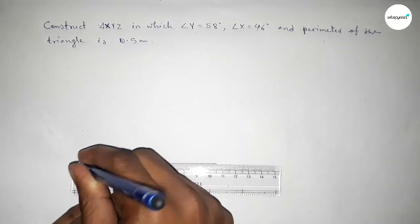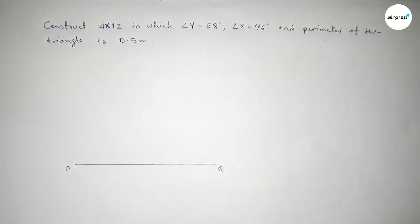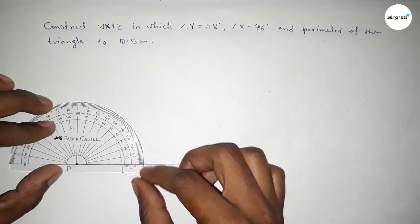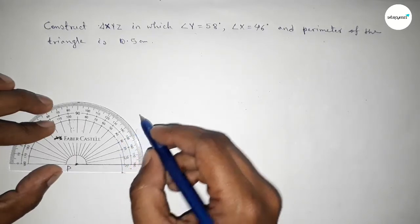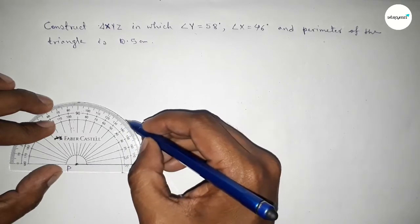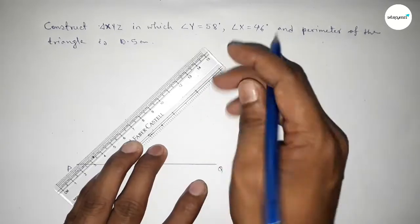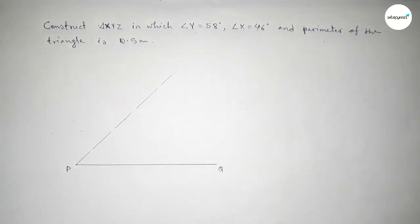This is the 10.5 centimeter line. Taking here point P and here point Q. Now first we have to draw a 46 degree angle at point P using the protractor. This is 45 and this is 46 degrees. Now joining this line to get a 46 degree angle.